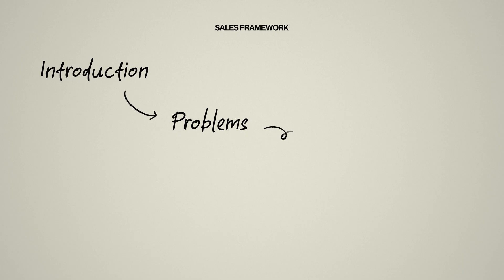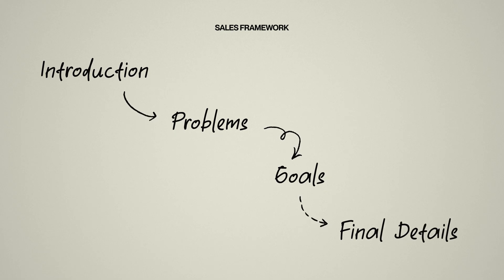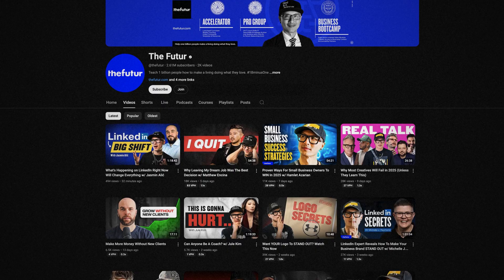It's about asking the right questions to fully understand their business problems, their current situation, and where they want to be. A quick sales framework I learned is: start with an introduction to establish the tone, then dive into their problems — what's stopping them from where they want to be and how it's impacting their business. Once you understand their problems, transition to their goals — where they want to be and how achieving that goal would transform their business — and how you can help get them from point A to point B. After understanding their business fully, then go into the details of budget, proposals, and follow-up emails. For more on the sales process, I highly recommend checking out The Futur or Chris Do, who has great videos on sales.